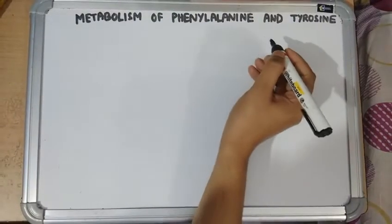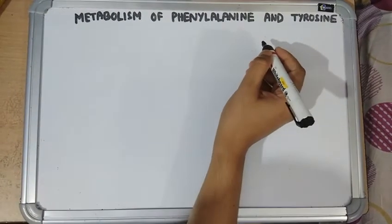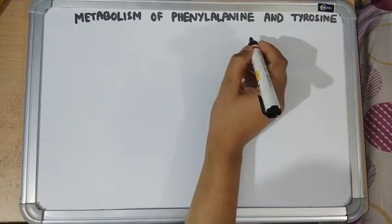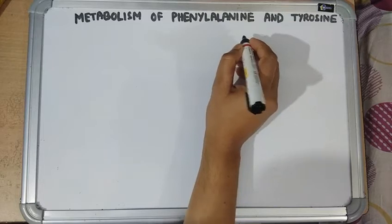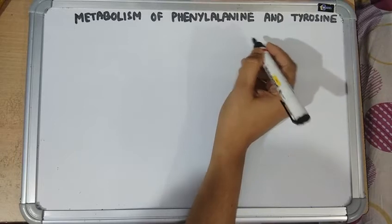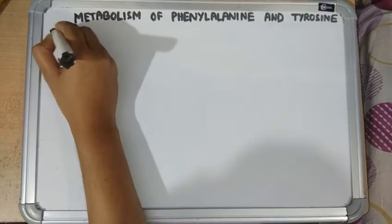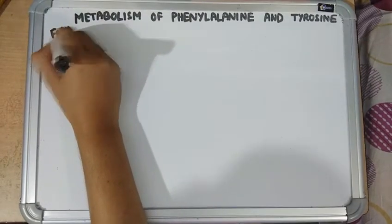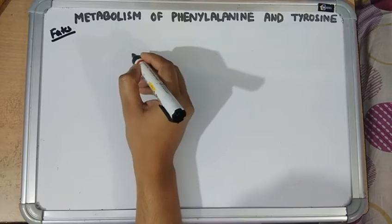Today's topic is metabolism of phenylalanine and tyrosine. Phenylalanine is an essential amino acid, while tyrosine is non-essential. Both are glucogenic and ketogenic amino acids. We will discuss the fate of phenylalanine and tyrosine as well as the important metabolic reactions.